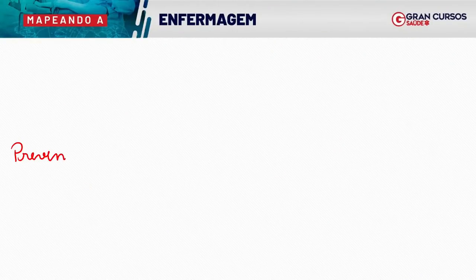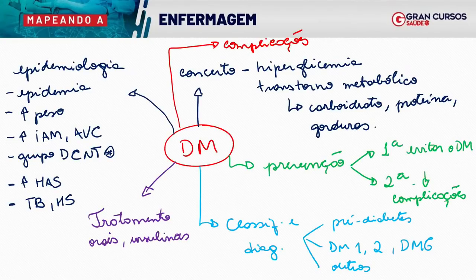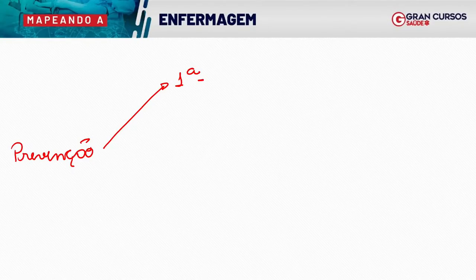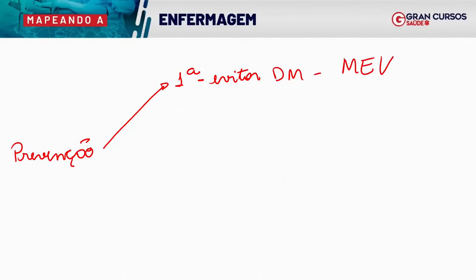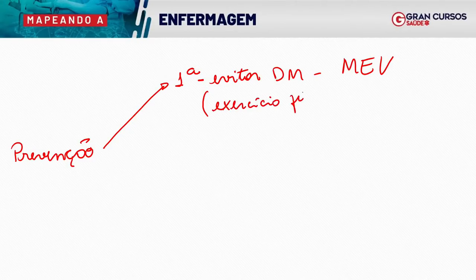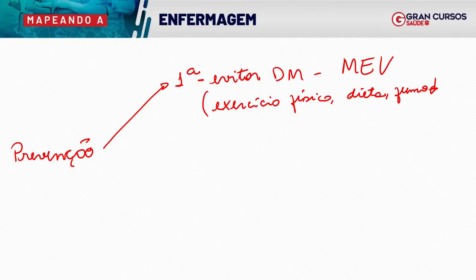Terminando esse mapa, vamos falar logo sobre a prevenção. A prevenção primária, que é de contexto epidemiológico, visa evitar a doença. Como evito a doença? Com MEV — mudança de estilo de vida. O que é essa mudança de estilo de vida? Combate ao sedentarismo, exercício físico, melhora da dieta, diminuir ou eliminar o fumo. Tudo isso envolve a prevenção primária.